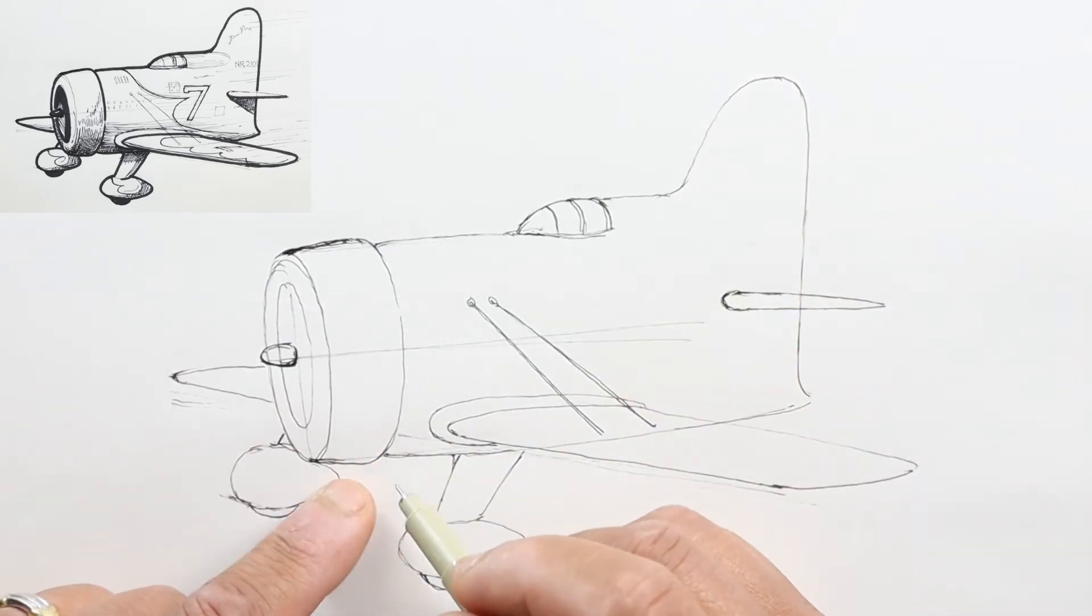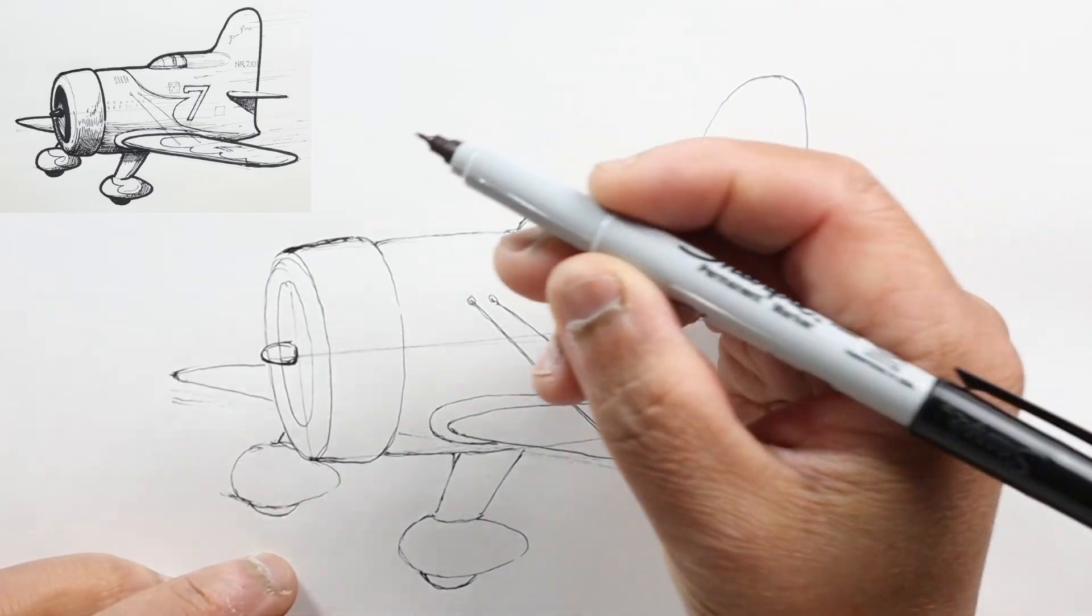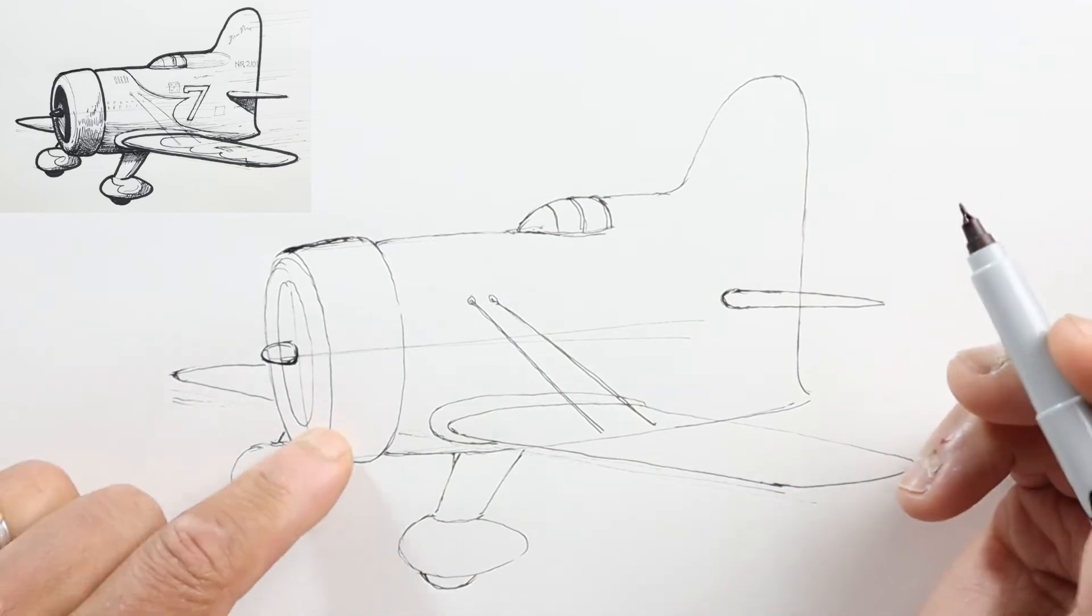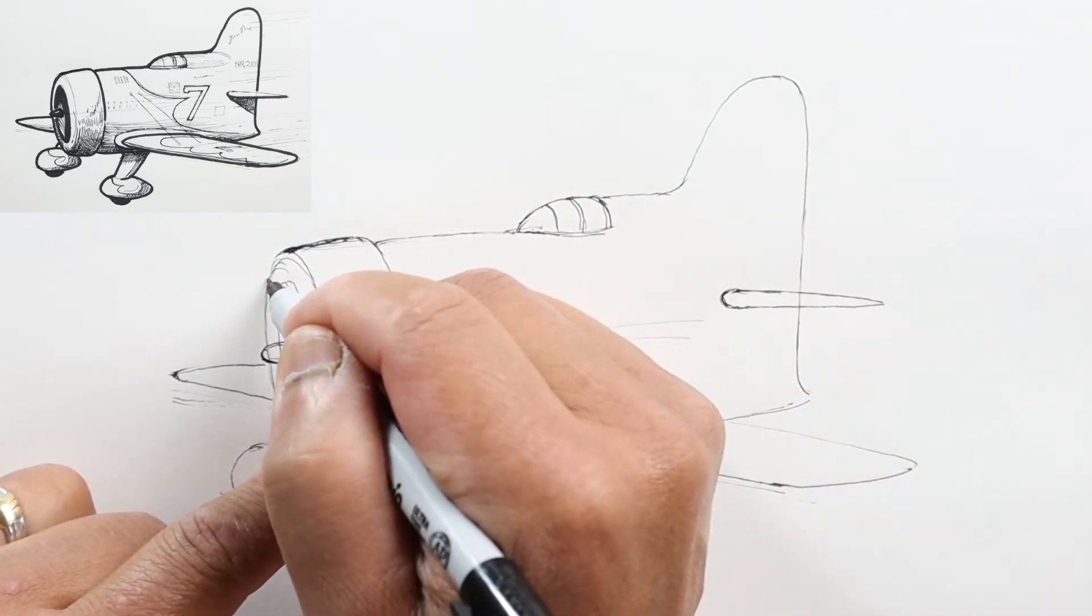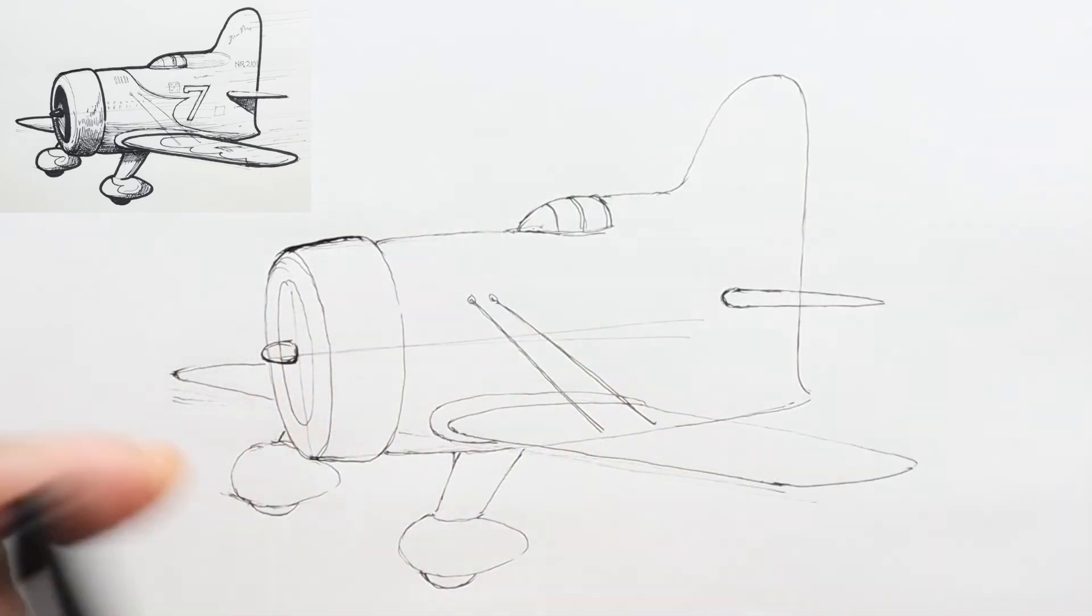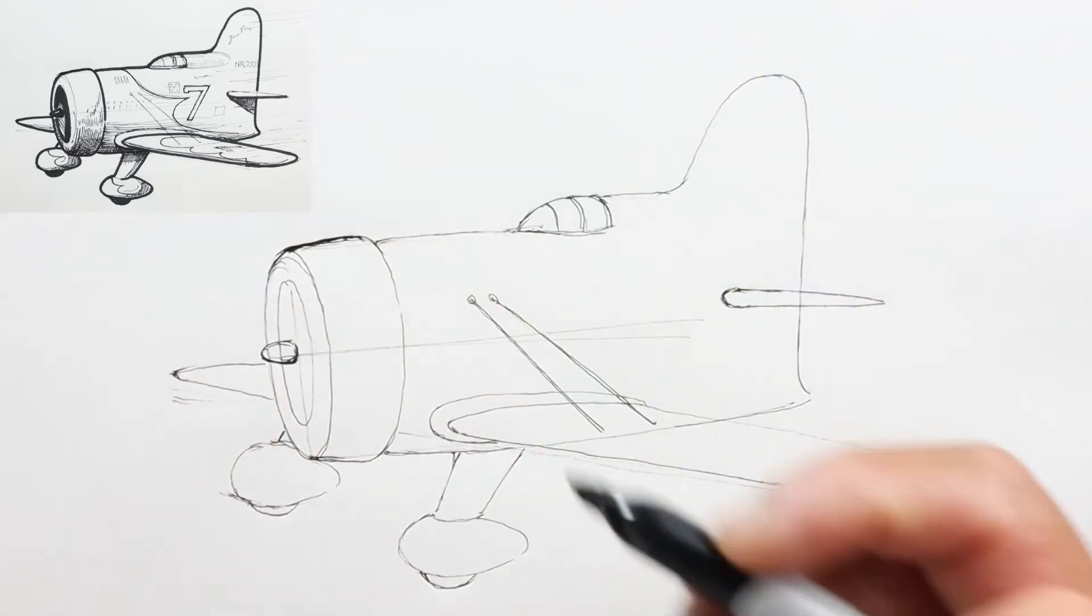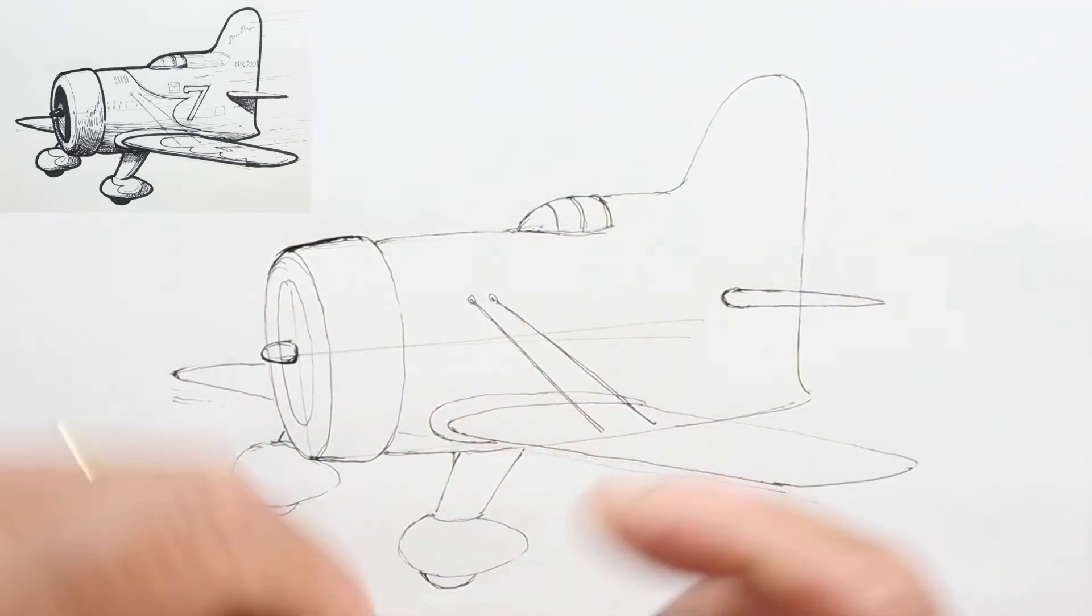We should be pretty much done, so I'll take my thin Sharpie and start defining some of the outlines. Actually, I'm going to use my thicker marker.